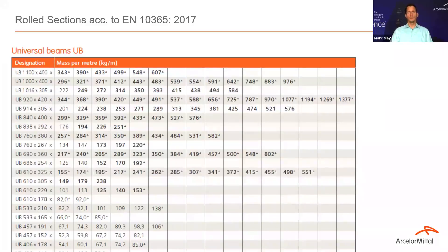The UB beams, formerly in the British Standard, are now in the European norm EN 10365. We offer the full range and even some sizes more that were not in the former BS4 standard, which has since been withdrawn.